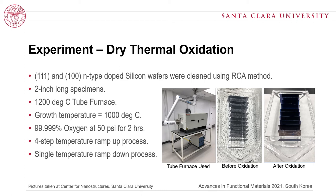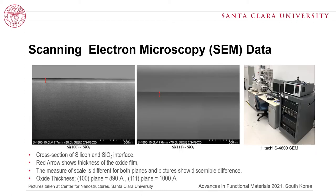Let's look at the analysis of oxide samples in scanning electron microscopy. The pictures were gathered using Hitachi's SEM and represent the cross-section of the silicon and silicon dioxide interface. The red arrow shows the oxide thickness film. Both planes show relatively similar oxide thickness, though the scale differs slightly. The oxide thickness was found to be 890 Å for the 100 plane and 1000 Å for the 111 plane.